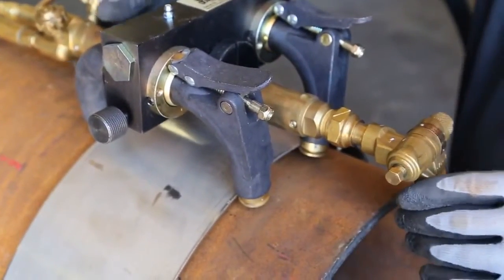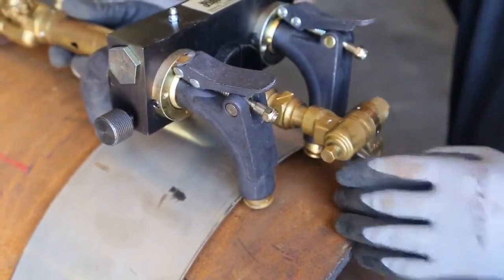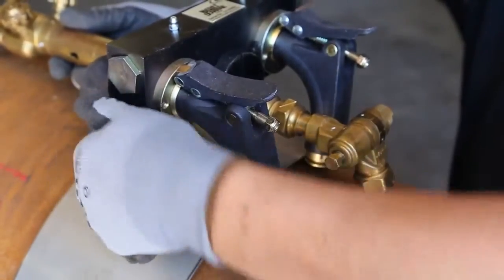Set the desired bevel angle and position the torch to the cut line. Turn the set screw to lock the torch.